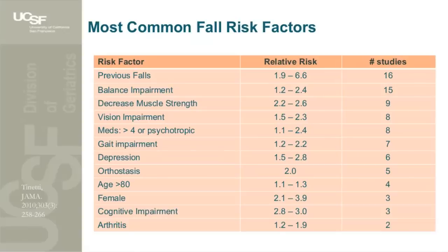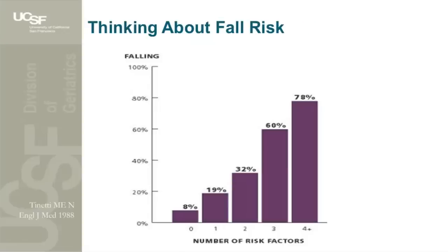Mary Tinetti, a national expert on falls, did a systematic review of the fall risk factor literature. Of 33 studies reviewed, the most commonly studied risk factor was previous falls — patients who've had a previous fall are at extremely high risk of falling again, as is balance impairment. The risk of falling increases linearly and dramatically as the number of risk factors increases. One study showed those with no risk factors had an 8% chance of falling, skyrocketing to about 80% for patients with four or more risk factors.